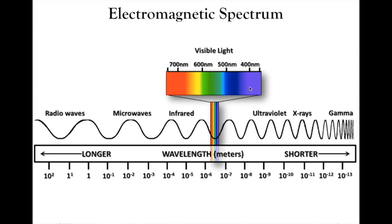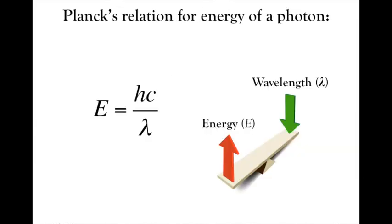Visible light falls somewhere in the middle, spanning a spectrum from 350 nanometers to about 750 nanometers. In terms of understanding the relationship between energy and wavelength, we use Planck's relation: energy E equals Planck's constant h times the speed of light c, divided by the wavelength lambda. As energy increases, wavelength decreases, and vice versa. Radio waves have very low energy — around 10 to the minus 8 electron volts per photon — while gamma rays are much higher energy at 10 to the 7th electron volts per photon.